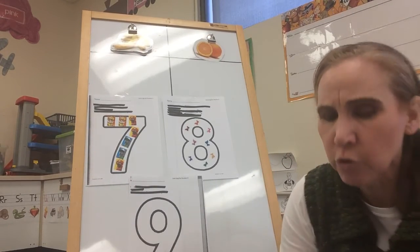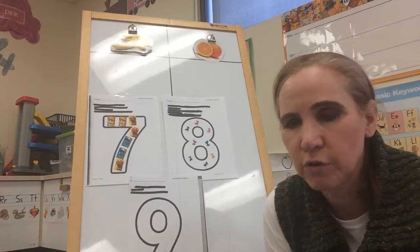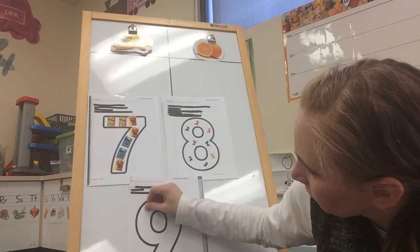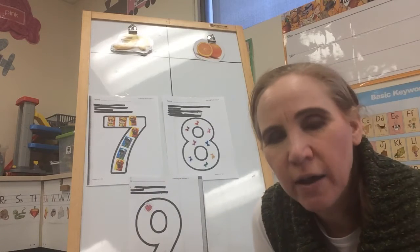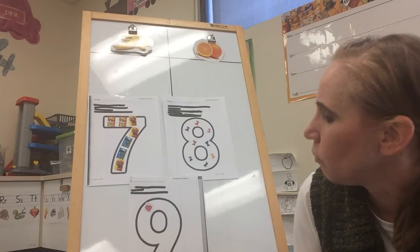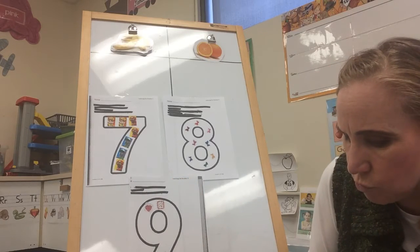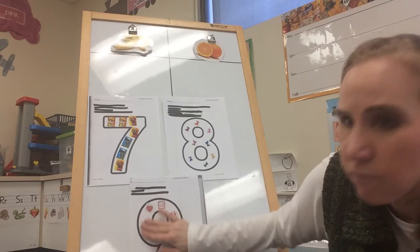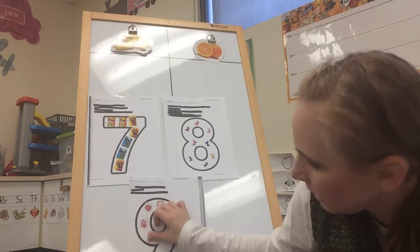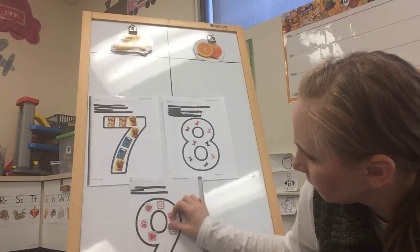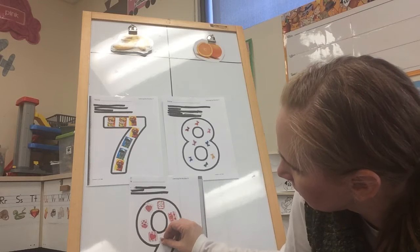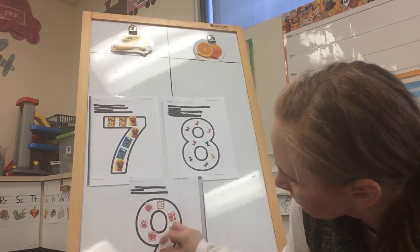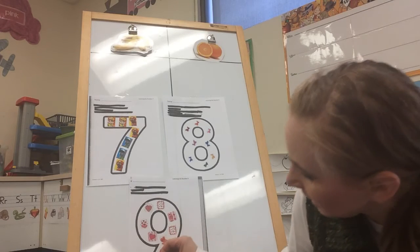Alright, number nine. I'm going to use some Valentine's stickers for number nine, but you can use whatever I gave you. And let's get nine stickers in number nine. I'm going to start here. Maybe I'll count as I put them this time. So one, two, three, four, five, six, seven, eight, nine. Nine.